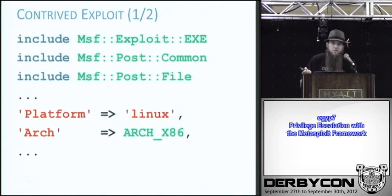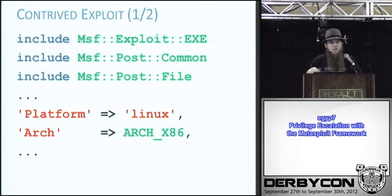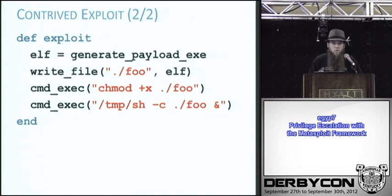Here's our contrived exploit. I just talked about the exploit mixins and post mixins, so we include the things we need. We set up the platform to be Linux and architecture to be x86 — exactly the way normal remote exploits work. Our exploit method is really simple: we're just generating an executable, writing it out to a file, marking it executable, and running it with temp.sh — that's the setuid wrapper we have around bash.